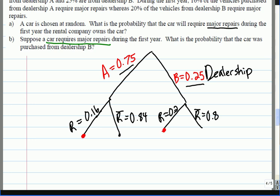Okay, so out of the entire thing, major repairs are going to be 0.16 times 0.75 and 0.2 times 0.25. Yes, question, we can verify that, just give me a minute. So I get 17%.